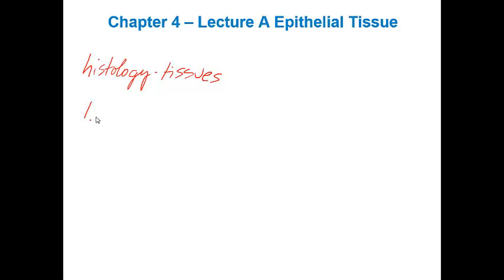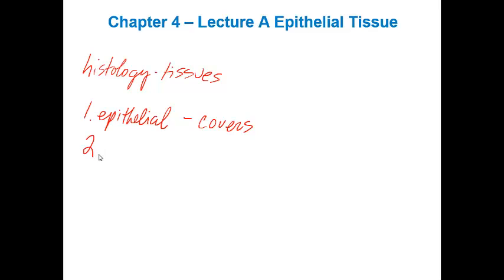This first lecture is going to be on epithelial tissue, and epithelial tissue is going to be thought of as the covering of the body. So it's going to be making up the skin. It's also going to be lining internal organs as well as blood vessels. Connective tissue, which is the most diverse of all the different types of tissues, is going to be thought of as support, and there are many different examples.